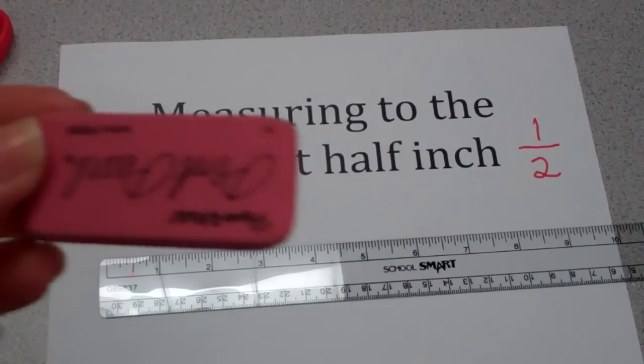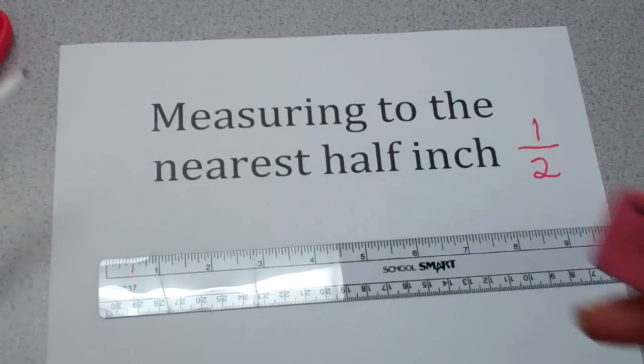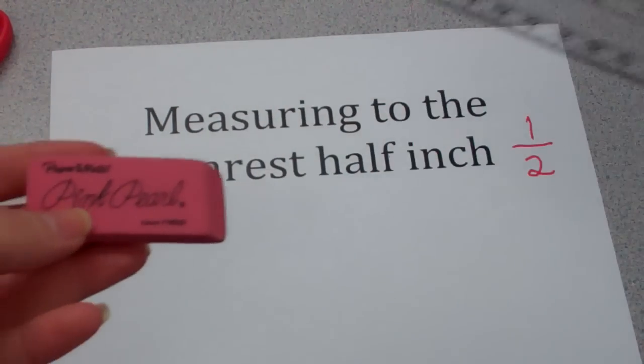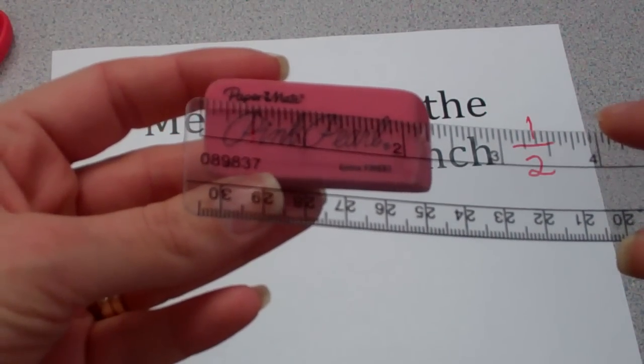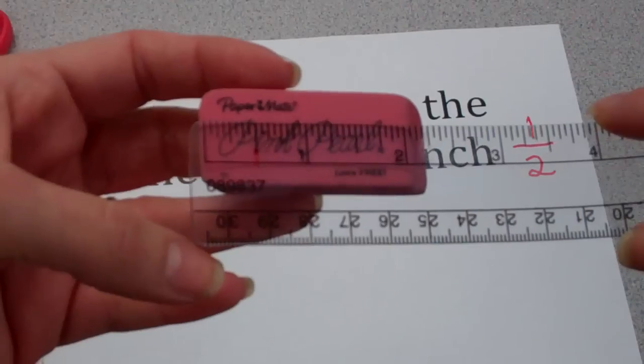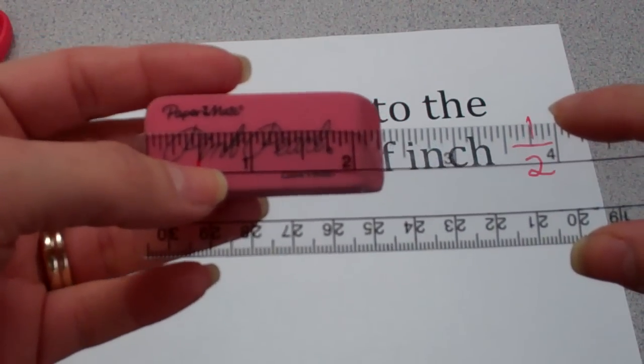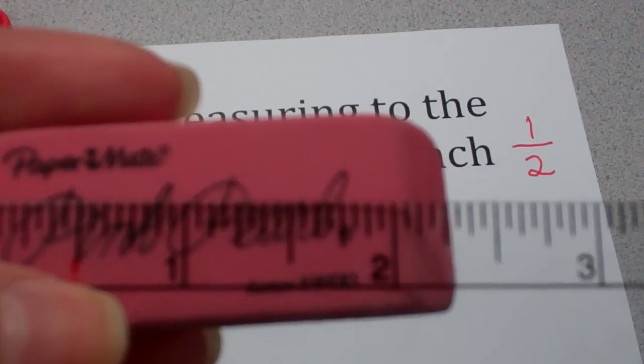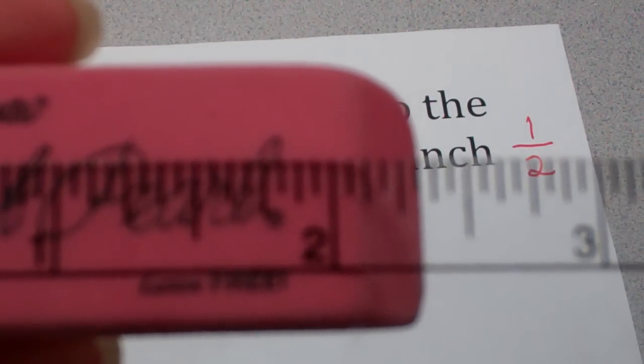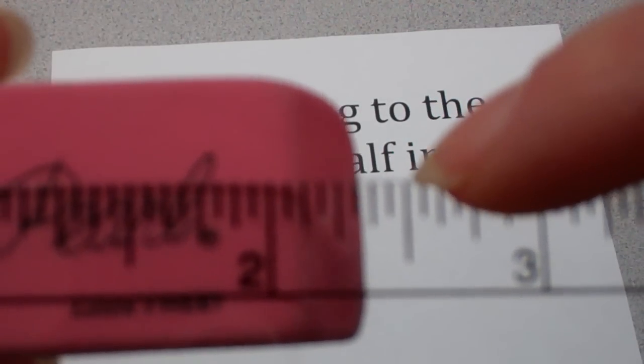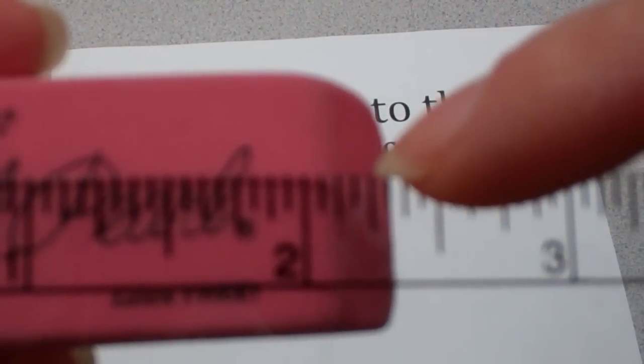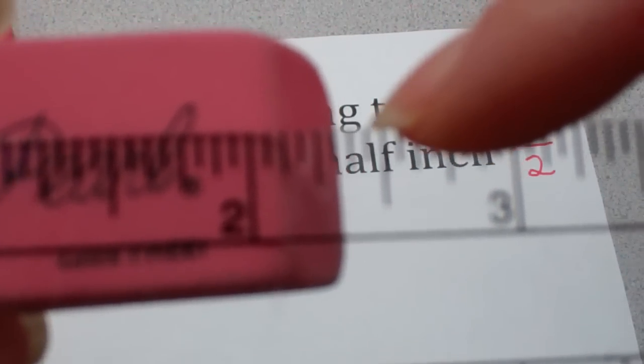Let's start with this eraser. On the first day of school, many of us got a pink eraser. Just like measuring to the nearest inch, I'm going to start measuring this eraser by lining up my eraser with the first hash mark on my ruler. Then if I zoom in really close, you will see that this eraser is more than two inches long, but it's not quite to three inches long. You might say that this eraser is almost two and a half inches long.